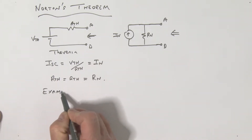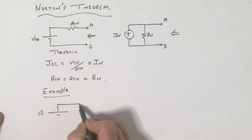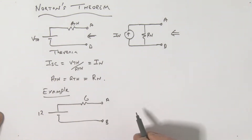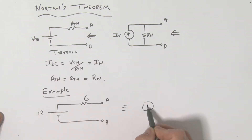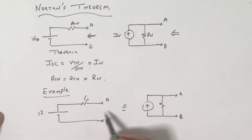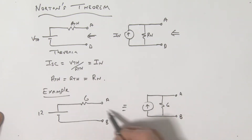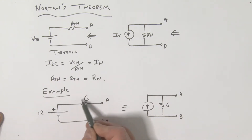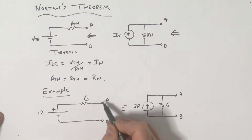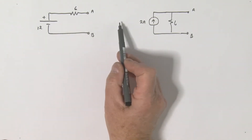Let's take an example. Suppose I have a circuit with 12 volts, a Thevenin resistance of 6 ohms, and terminals A and B. The equivalent Norton circuit has the same terminals A and B, with R_Norton equal to 6 ohms. The Norton current is the short circuit current: 12 volts divided by 6 ohms, which is 2 amps. These two circuits are equivalent as far as terminals A and B are concerned.